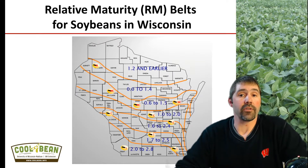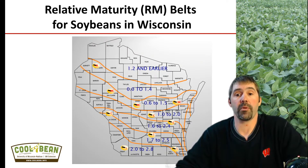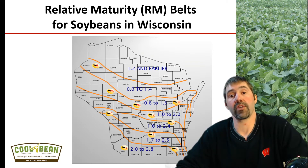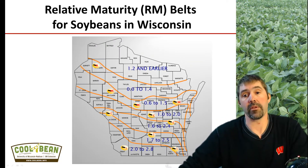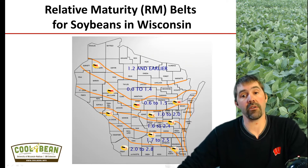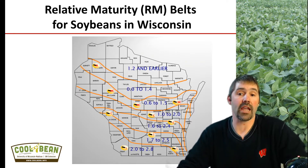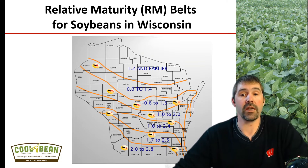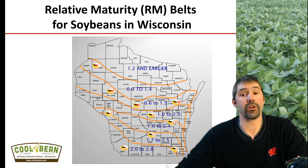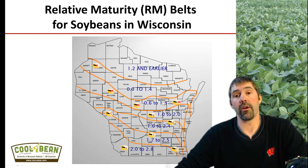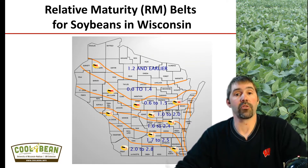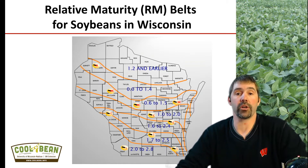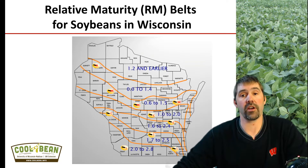We also guide growers on which relative maturity to plant based on their latitude within Wisconsin. Based on your county and location in the state, there is a recommended relative maturity range. For example, if you farm in Dane County or Jefferson County, the optimal maturity group range is 1.7 to 2.5. As you move further north to Marathon County, that relative maturity shrinks down to 0.0 to 1.4. This helps growers hone in on which maturity groups perform best in their specific geographic region.